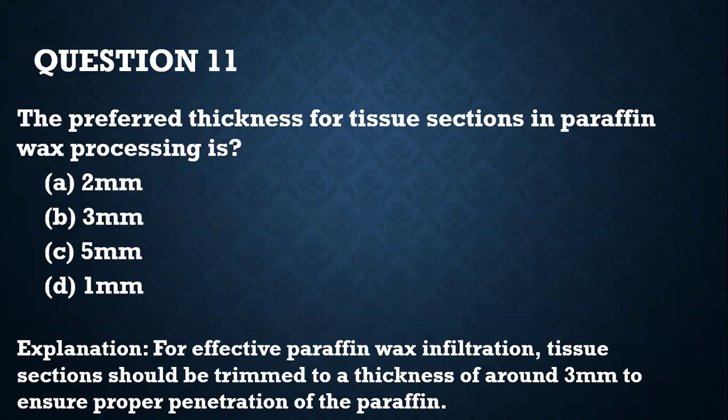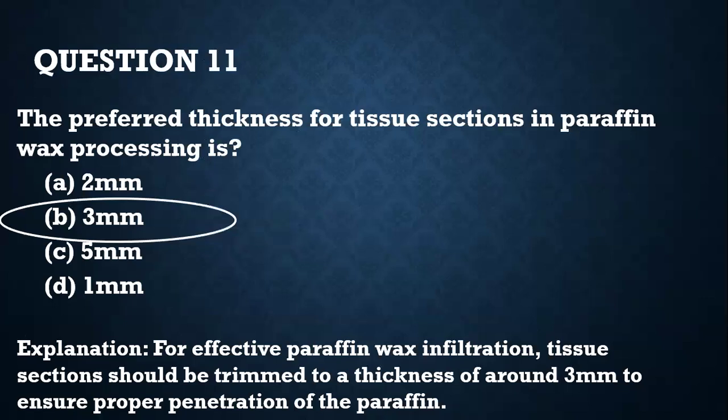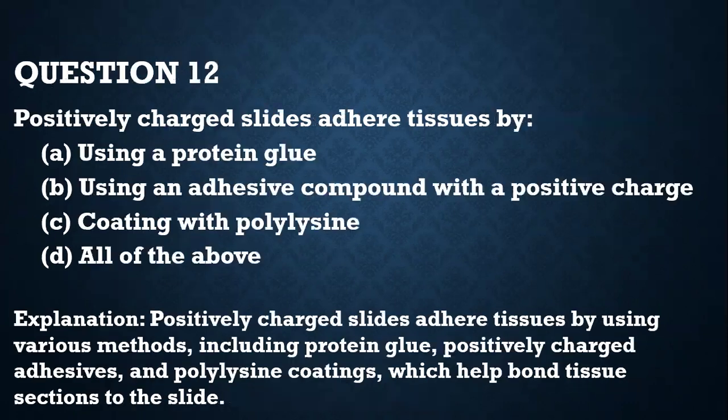Question 11. The preferred thickness for tissues in paraffin wax processing is about 3 millimeters, because for effective paraffin wax infiltration, tissue sections need to be trimmed to a thickness of around 3 millimeters to ensure proper penetration of the paraffin.